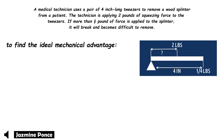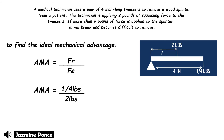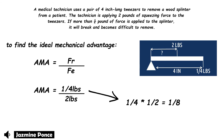To find the actual mechanical advantage, we use AMA = FR ÷ FE: (1/4 lb) divided by 2. To simplify, we multiply 1/4 by the reciprocal of 2, which is 1/2: 1/4 × 1/2 equals 1/8. So the actual mechanical advantage is 1/8, or in decimal form, 0.125.